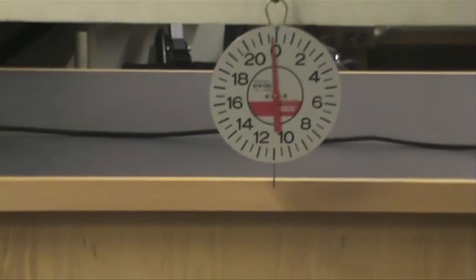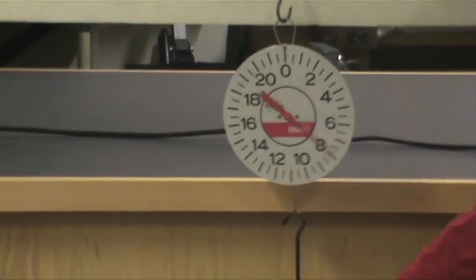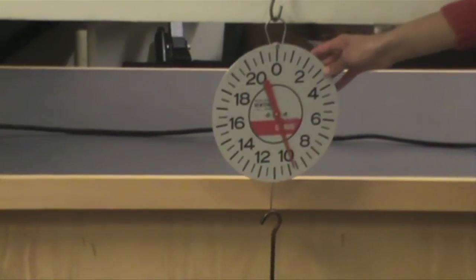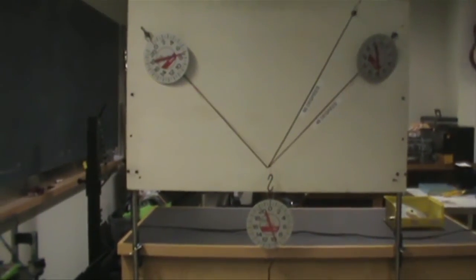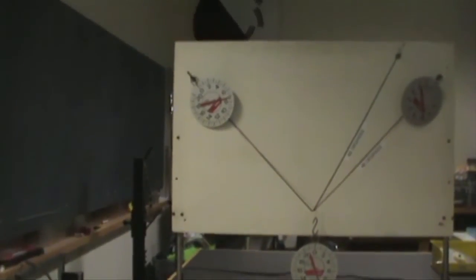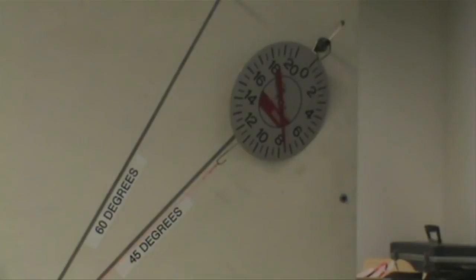Let's add a 1 kg mass to the hook below the bottom scale. The bottom scale now reads about 9.6 Newtons. Now let's look at the top two scales. We see that the tension force on string A is 7.4 Newtons. And the tension force on string B is 7.5 Newtons.